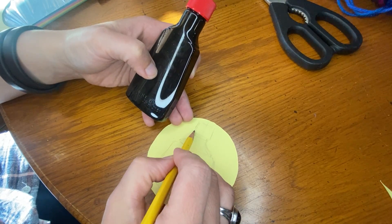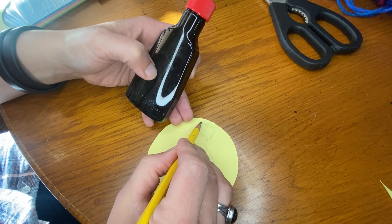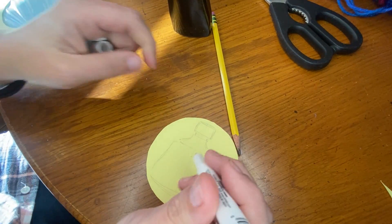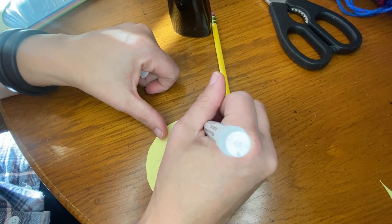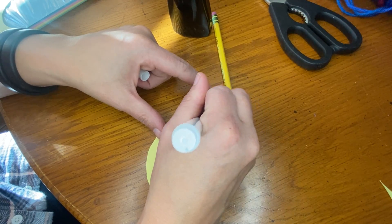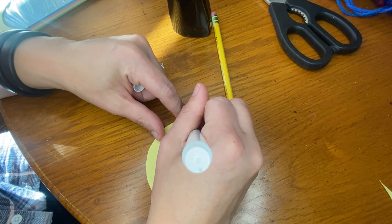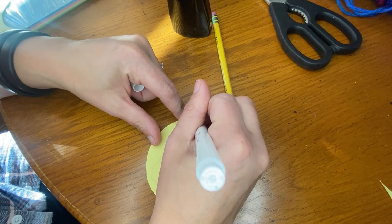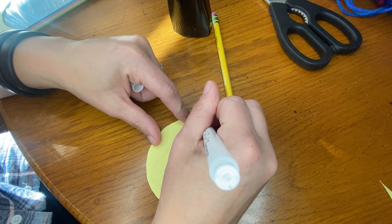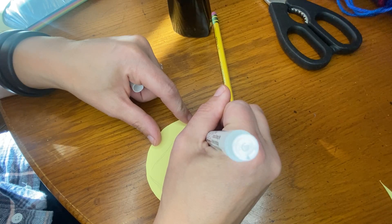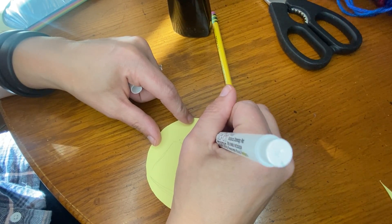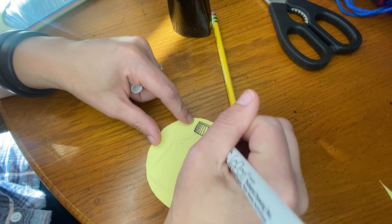All right, so once I have my bottle drawn how I want it to be drawn, I'm going to go ahead and take my marker or my pen and ink that in. Okay, so I'm picking my lines that I want to include. My stripes get a little bit more spaced out in the middle and they get closer together as they get closer to the edge.